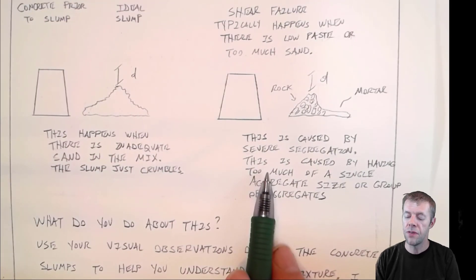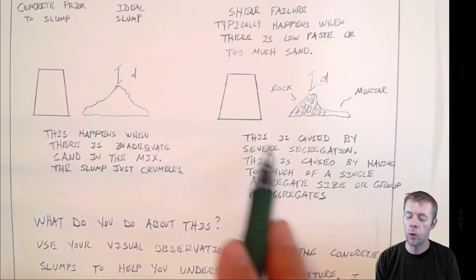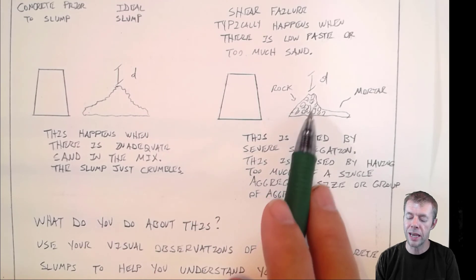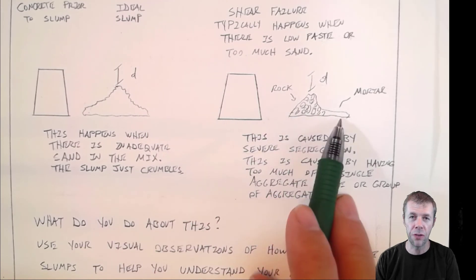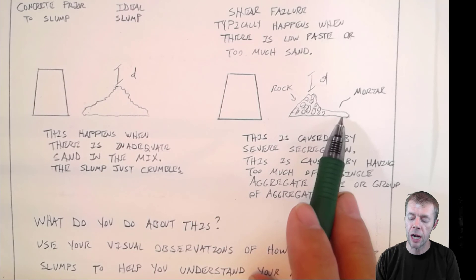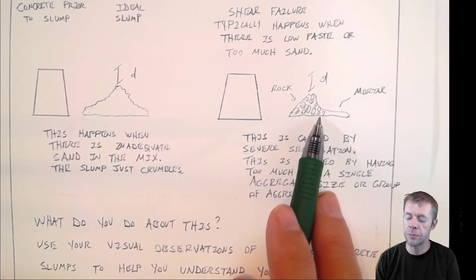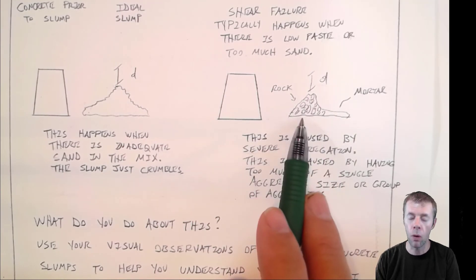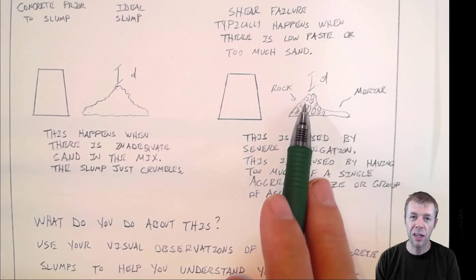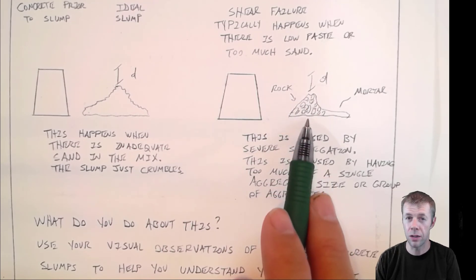Then there's this case. This is segregation. This is where you pull the slump and the rock kind of stays there and the mortar kind of falls off the side. And it may not fall out one side. It may fall out multiple sides. But the rock just kind of ends up in a big pile. If you measure to the top of the rock, it still may be like five inches or something like that. But this is not good. This is not what you want.